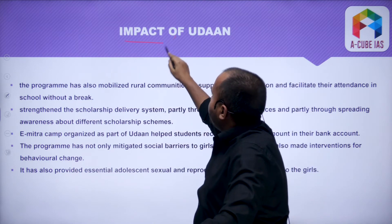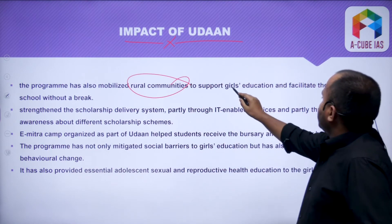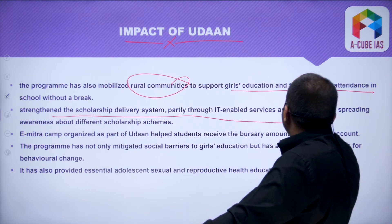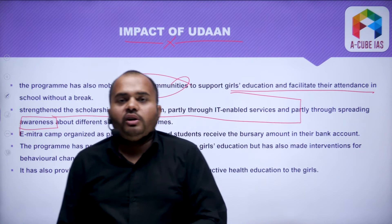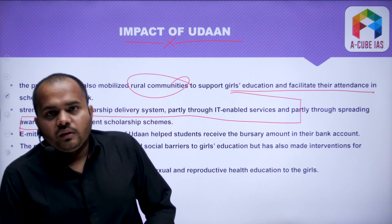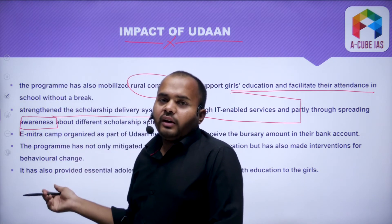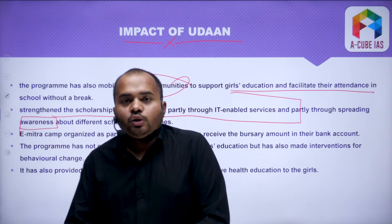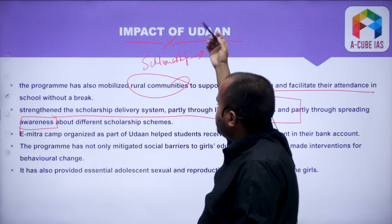Now, what is the impact of Udaan? First, the program has mobilized rural communities to support girl education and facilitate their attendance without a break in the scholarship delivery system, through IT-enabled services and spreading awareness. The government has many schemes where it promotes and gives scholarships, but due to lack of awareness, the benefits of these schemes do not reach people. One objective of Udaan is to increase awareness through IT-enabled services, and once awareness increases, girls will avail more scholarships, which will incentivize them to study more.